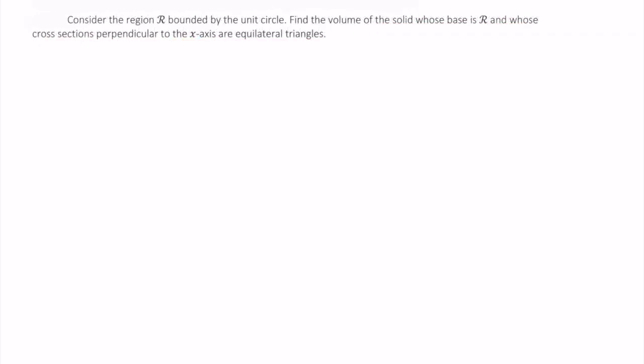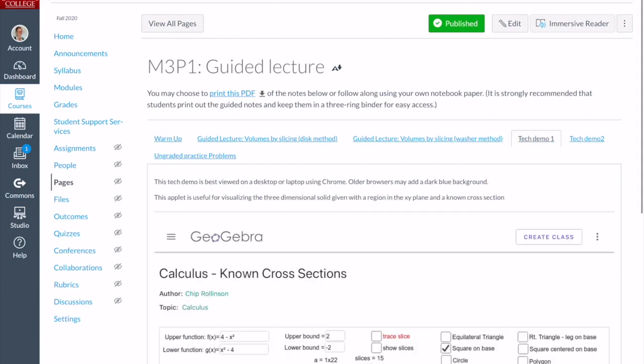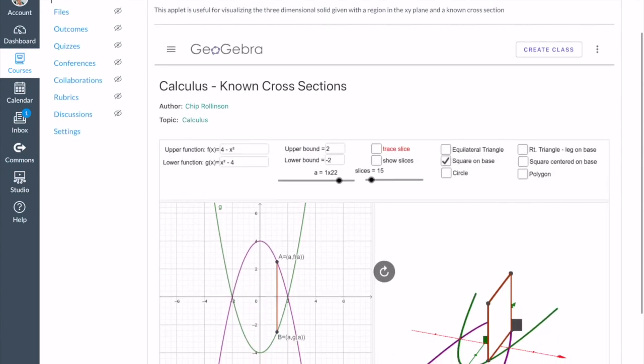The first thing we should do is get an idea of what this solid looks like. To do this, I included a tech demo in your Canvas course. So here's the guided lecture for your Module 3, Part 1. And you can see tech demos 1 and 2. I'm going to click on tech demo 1. And this kind of helps us see what these solids look like.